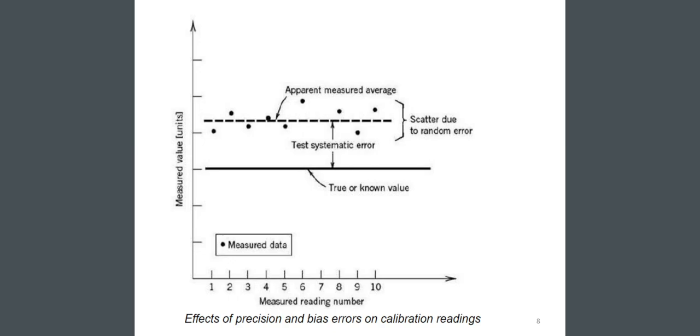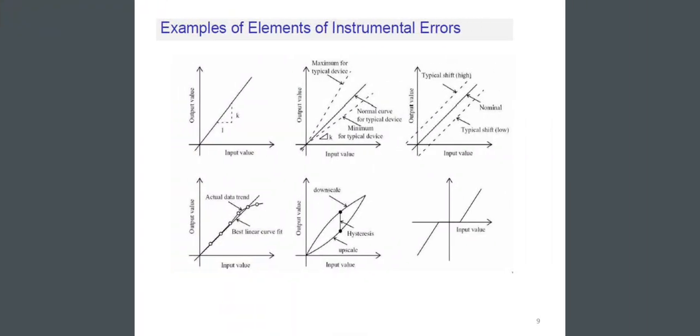There are some examples of elements of instrumental errors. The first one you can see here: input value as well as the output value. Look at the second figure, you can see here K, which is equal to for typical device, normal curve for typical device, and the minimum and maximum for typical device. In the third figure, you see here the typical shift high or the typical shift low, as well as the nominal.